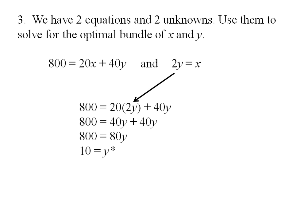I can plug that 10 back into either of my equations. It's easier to plug it into the 2y equals x equation in this case. So 2 times 10 is x or 20 equals x. Eric's optimal bundle contains 20 units of x and 10 units of y.